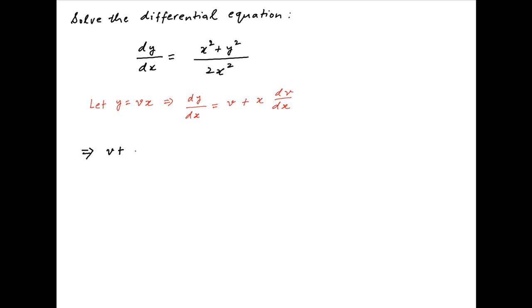Therefore, the given differential equation can be written as v plus x times dv/dx equals (x² plus v²x²) divided by 2x². x² cancels across the numerator and denominator of the right-hand side.